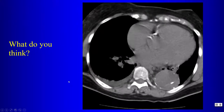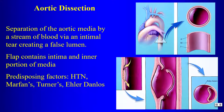On this non-contrast CT, notice the displaced intimal calcification and the dissection flap — we can make the diagnosis of aortic dissection on this non-contrast image. Dissection of the aorta involves separation of the aortic media by a stream of blood, creating two channels: a true lumen and a false lumen, separated by an intimal flap containing intima and an inner portion of the media.